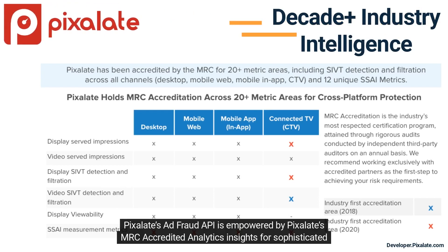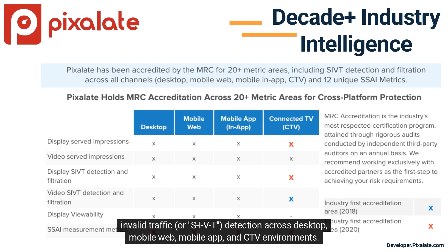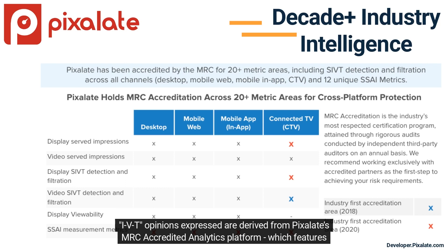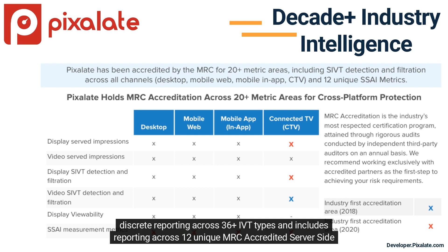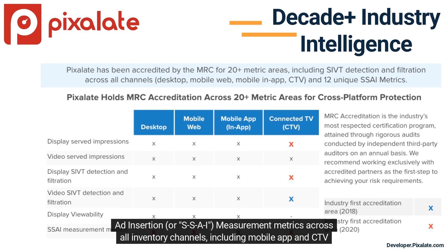Pixelate's AdFraud API is empowered by Pixelate's MRC-accredited analytics insights for sophisticated and invalid traffic, or SIVT, detection across desktop, mobile web, mobile app, and CTV environments. IVT opinions expressed are derived from Pixelate's MRC-accredited analytics platform, which features discrete reporting across 36 IVT types and includes reporting across 12 unique MRC-accredited server-side ad insertion, or SSAI, measurement metrics across all inventory channels, including mobile app and CTV environments.